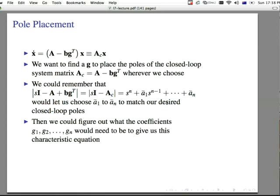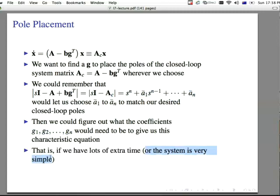And then we can figure out what the coefficients, g1, g2, all the way through gn, would need to be to give us this characteristic equation. And what we're working with here really are the characteristic equations. We know where we want to put the closed poles. And so we can figure out what the characteristic equation would have to be to get that to happen. And we can compare characteristic equations to help us find our g1, g2, and gn. And this all would work if we have lots of extra time, or if the system is fairly simple, third order or less. A lot of times this would make sense. If its order is 100, this is ridiculously long.